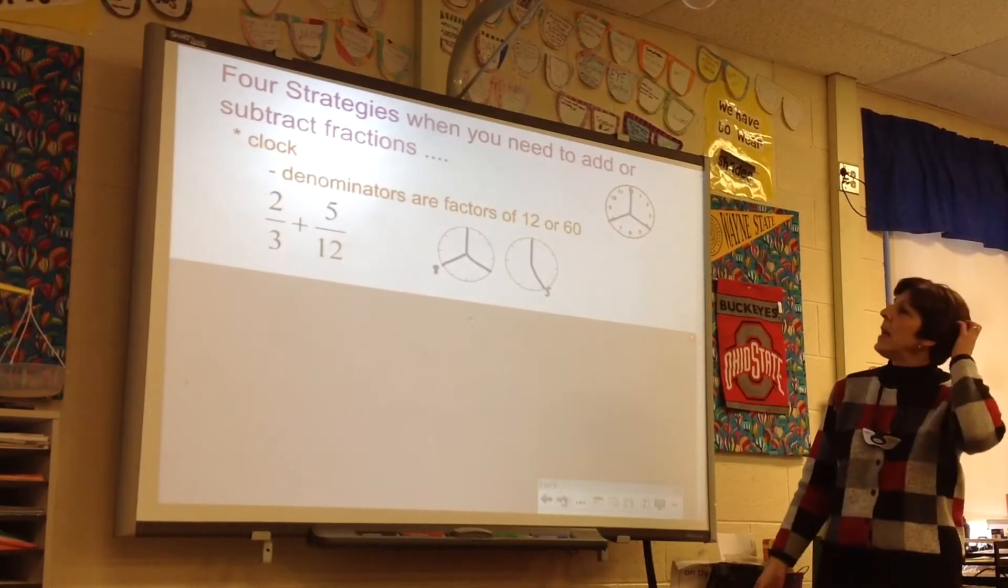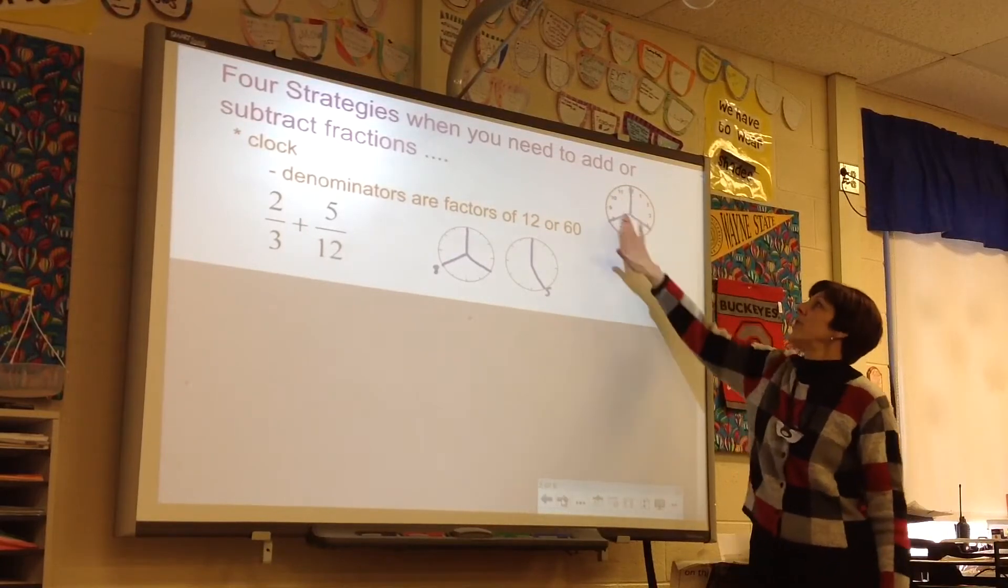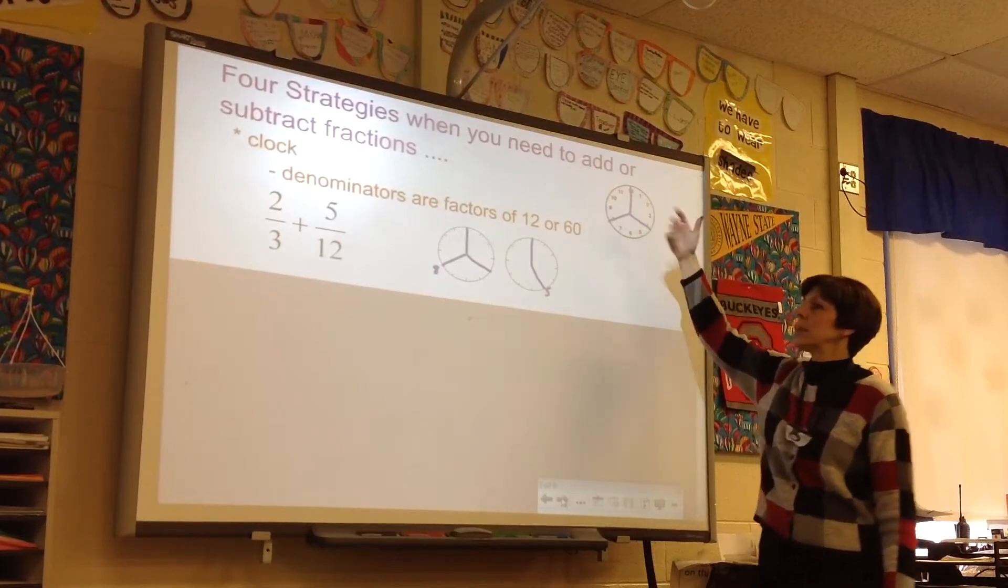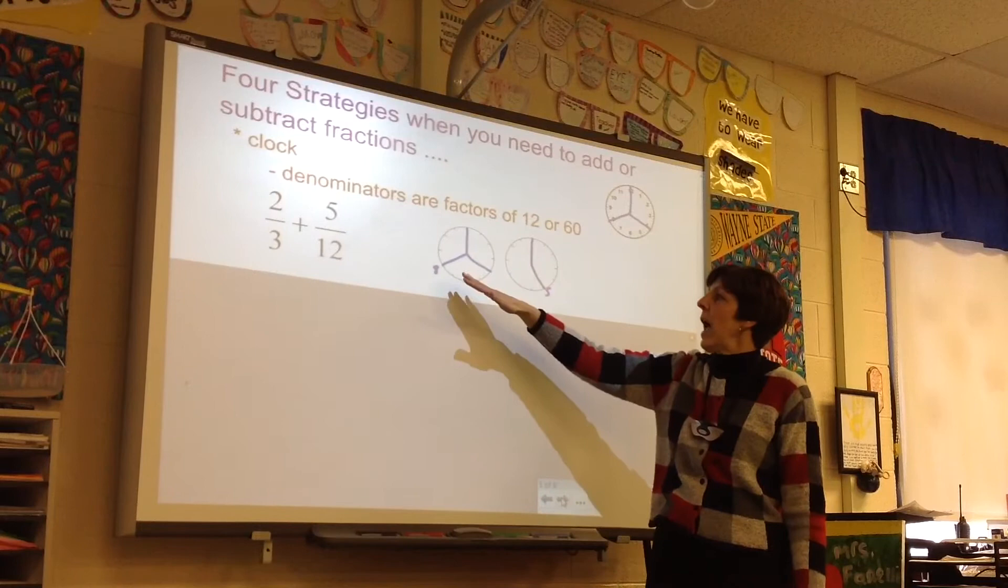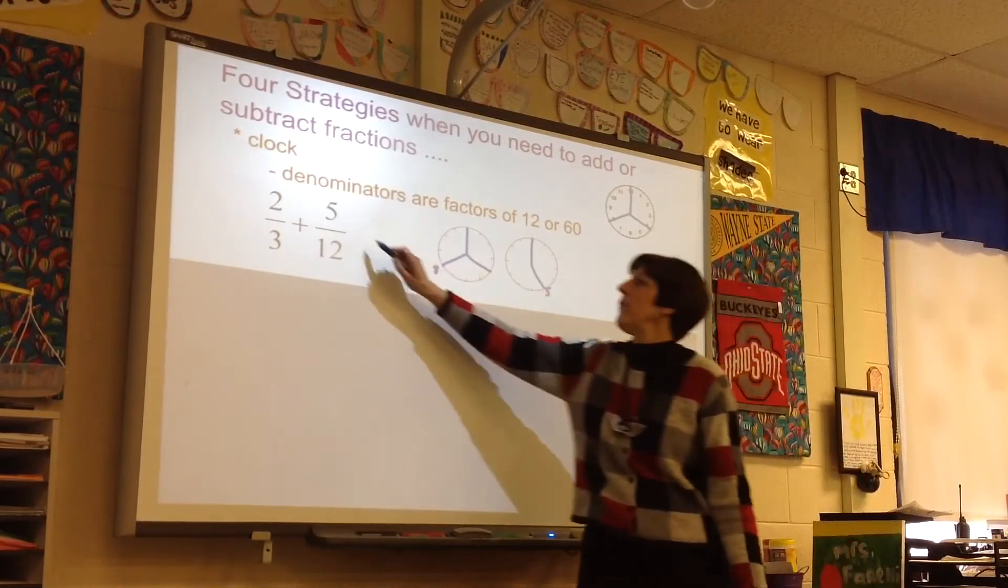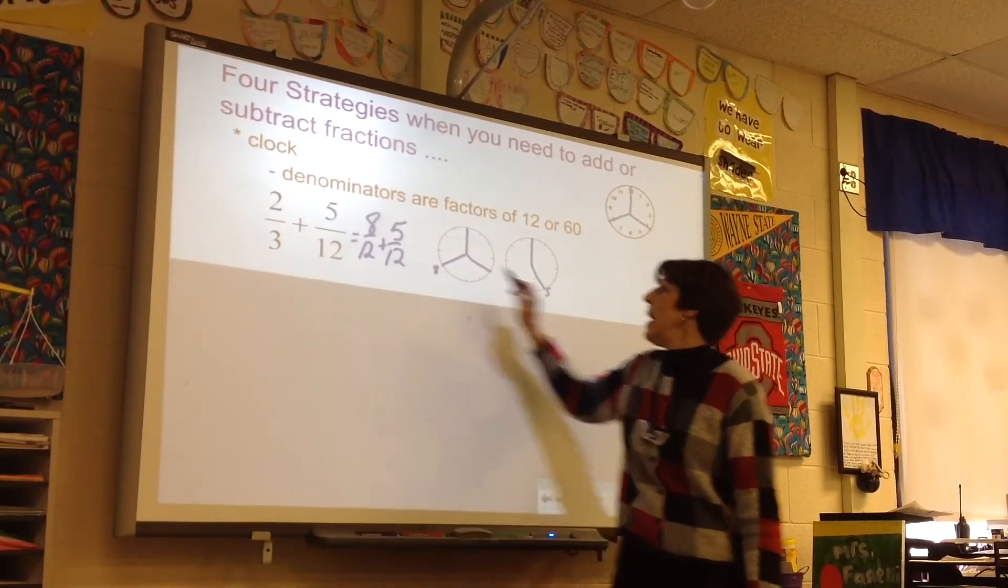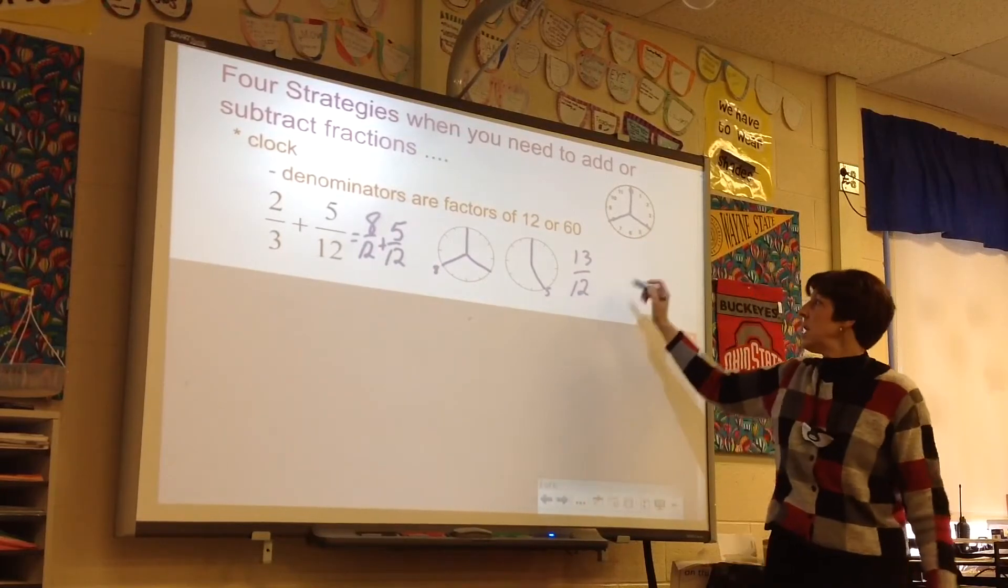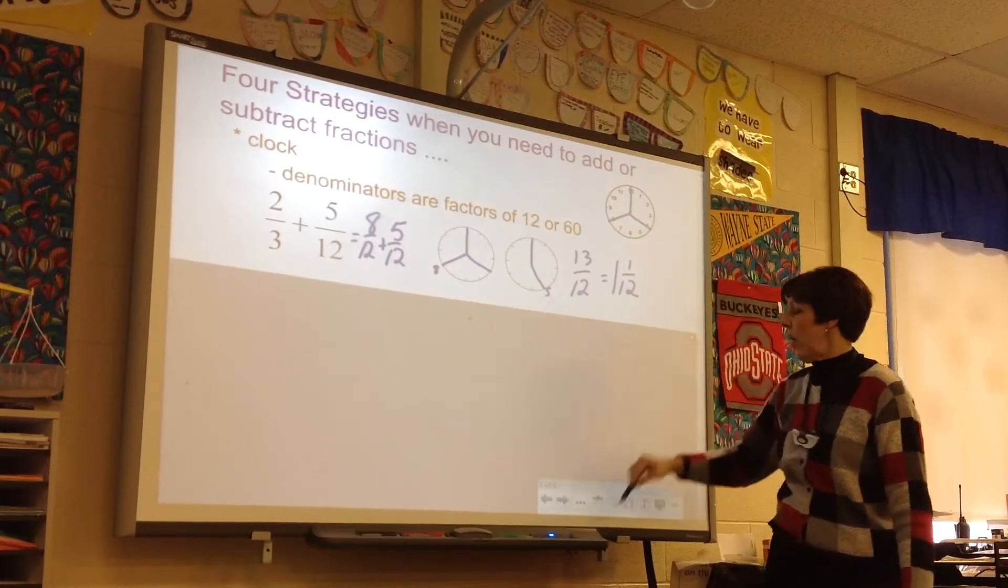Clocks, when denominators are factors of 12 or 60. We started the children with the numbers on the clock, and learning how to divide them into equal parts. So they've learned that 2 thirds, and they think of it in their head, is the same as 8 twelfths. The 5 is still 5 twelfths, so 8 twelfths plus 5 twelfths equals 13 twelfths. They can leave it as 13 twelfths or put it to 1 and 1 twelfth.